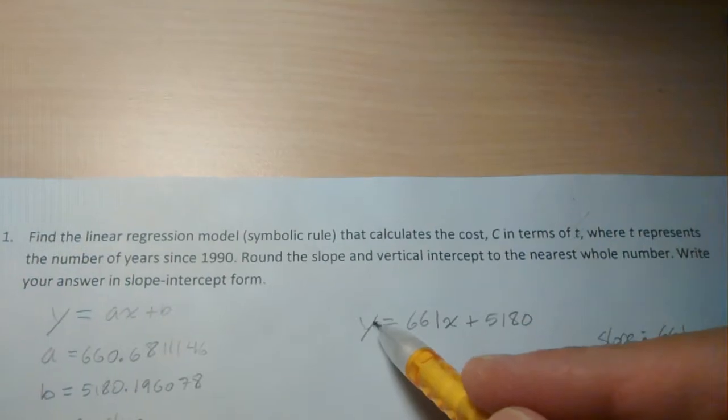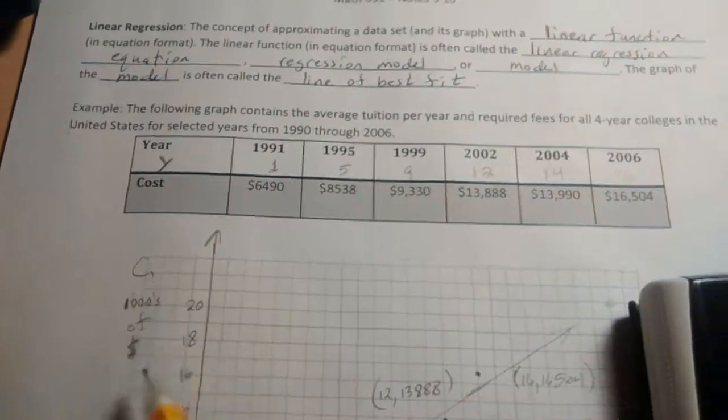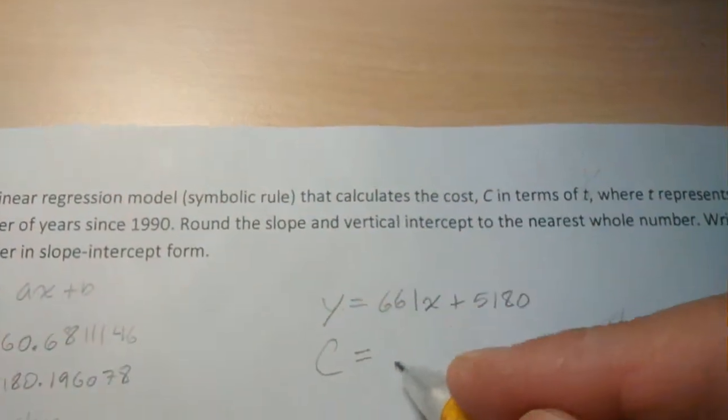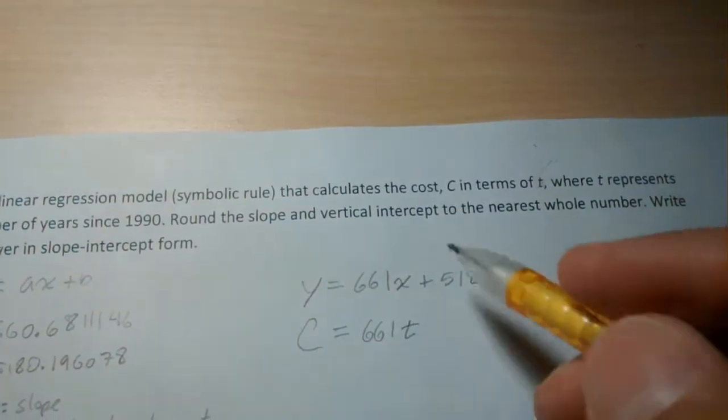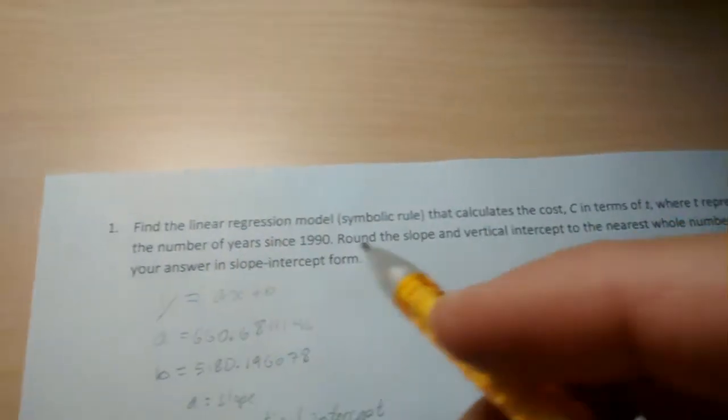Okay, so the output variable here being C, the cost. And the input variable being T, the number of years since 1990.